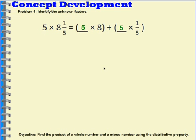So let's show this with a tape diagram. Here I have a tape diagram that shows eight and one-fifth, my eight wholes and my fractional piece of one-fifth. Now I am multiplying eight and one-fifth times five.